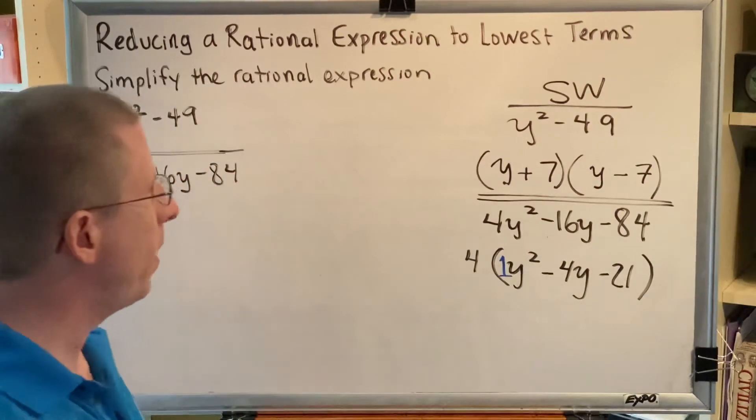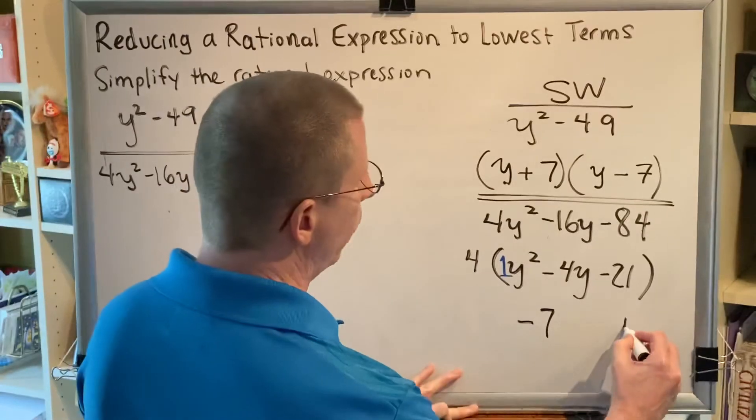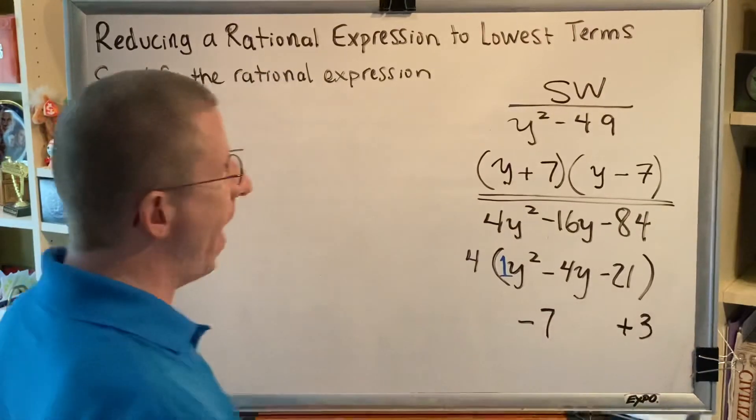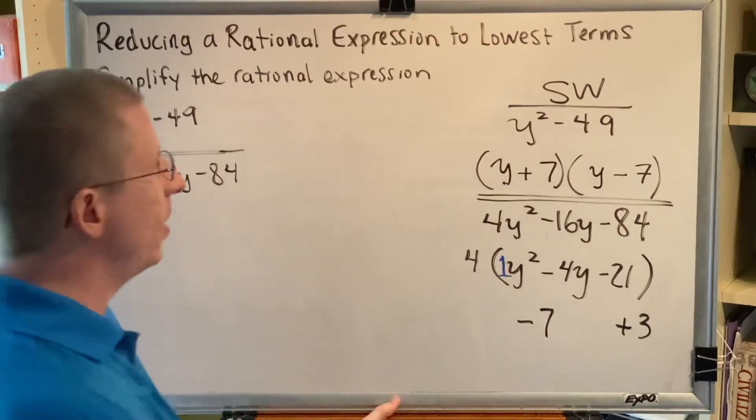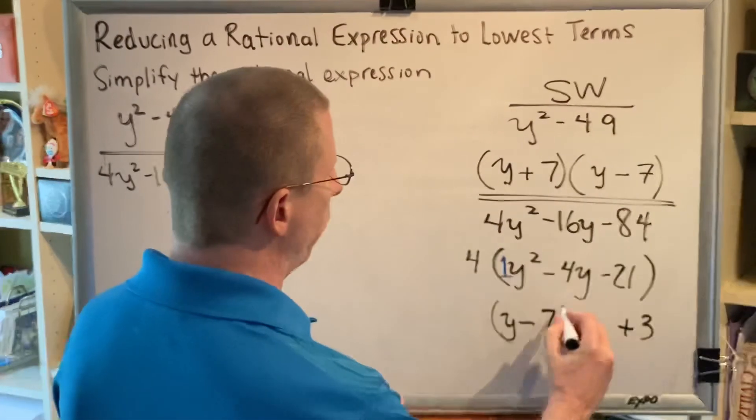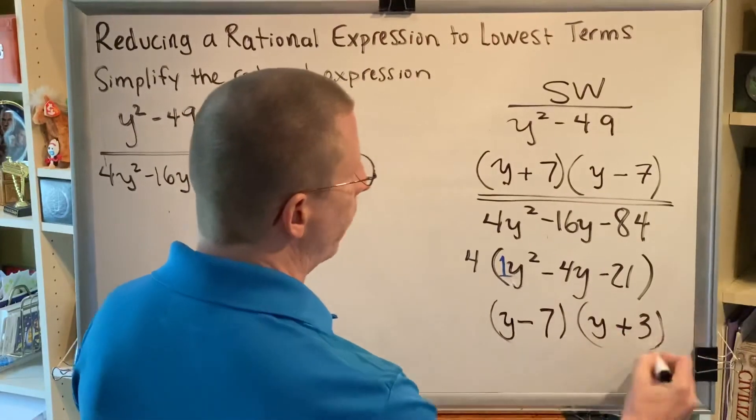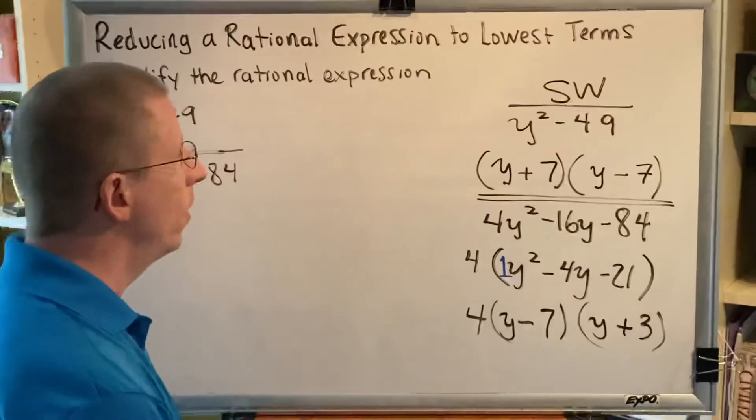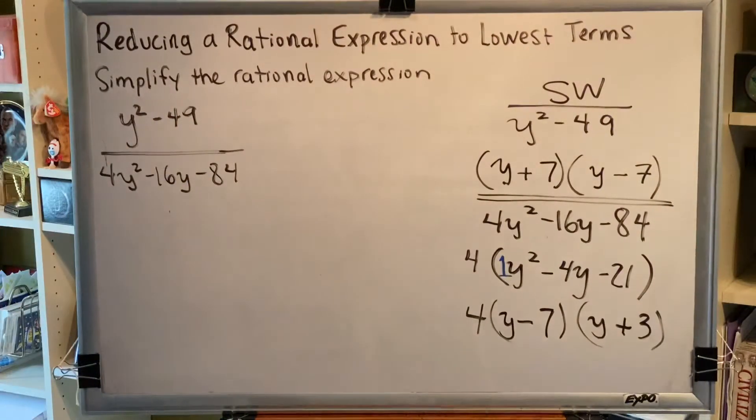Those numbers would be negative 7 and positive 3. And factoring that trinomial is actually pretty easy. You just have to put a y in front of both of those things and you'll have your factors. Don't forget to bring down your GCF. Your 4 has to come alongside your final answer.